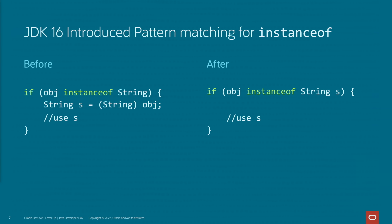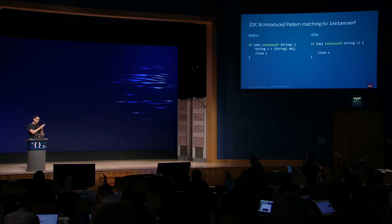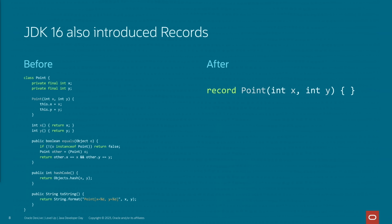Let's review the two changes that made this possible. JDK 16 introduced pattern matching to the instanceof operator. Prior to this change, if we wanted to do something with an object of a certain type, we'd have to do a test, declare a variable, manually cast it, and then use it. With pattern matching, we can do all of that in a single line. JDK 16 also brought in records, which simplified the creation of classes used just as simple carriers of immutable data. Knowing that a class is a record allows us to do some interesting optimizations, like the ones we're going to have now in record patterns.